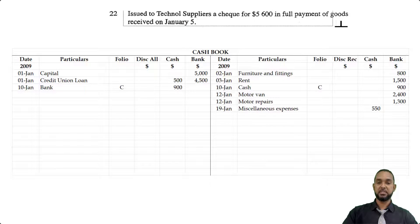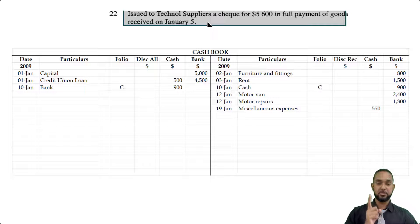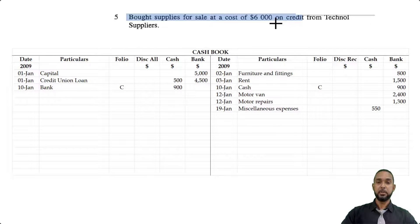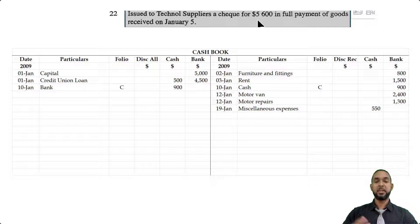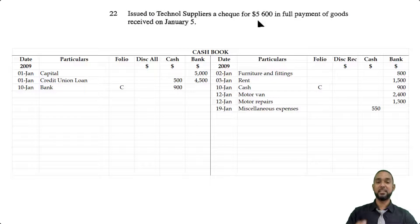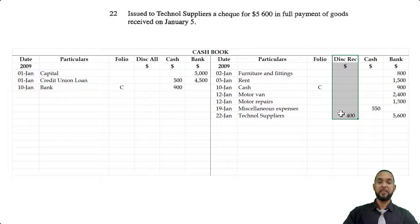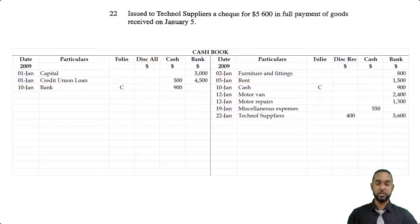On the 22nd, we issued Technol Suppliers a check for $5,600 in full payment of goods received on January 5th. It's a check for $5,600 in full payment, which implies there was a discount involved. Going back to the transaction on the 5th, the purchase value was $6,000. If we're paying only $5,600, how do we account for the $400 difference? That difference is accounted for by a discount received of $400. Because we're making a payment, we go on the credit side under the bank column. The discount received column will show $400, and if you add the $400 to the $5,600 you get back $6,000 — the original amount owed.